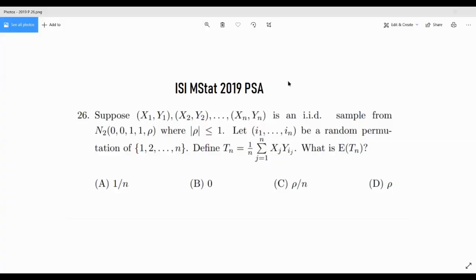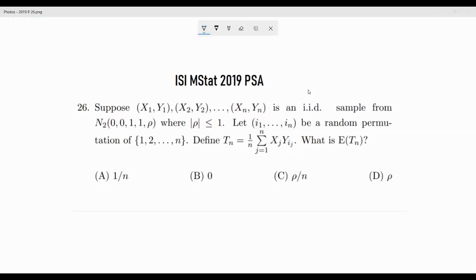Hello guys, welcome to the problem of ISI 2019, the objective part problem 26. This problem is really not very hard. It's based on the idea of smoothing of expectation. Let's see what the problem demands.